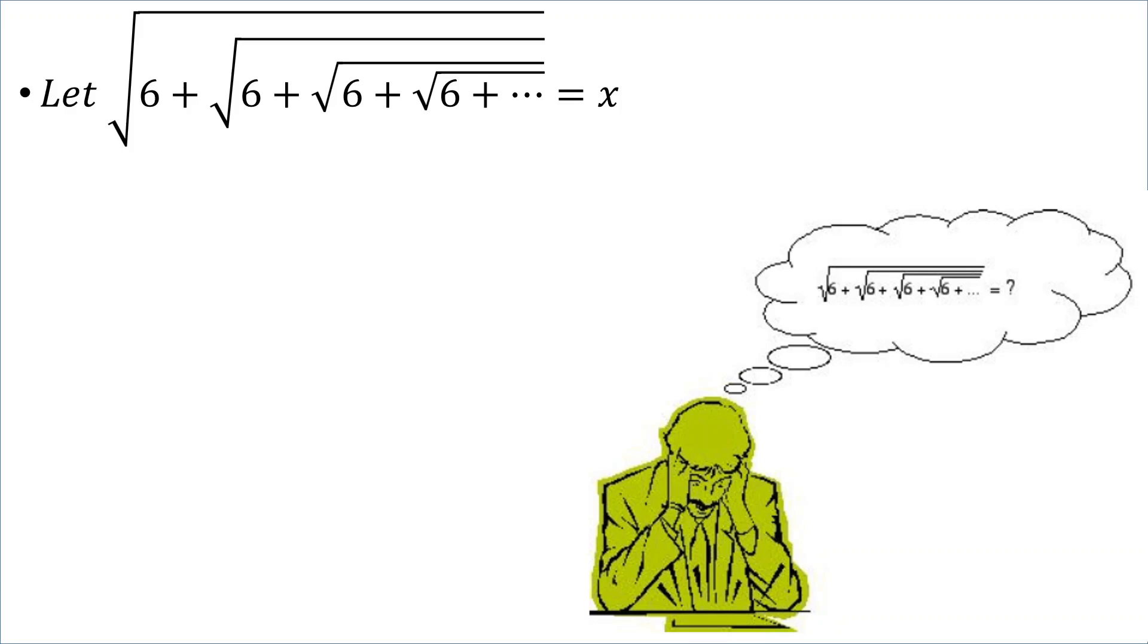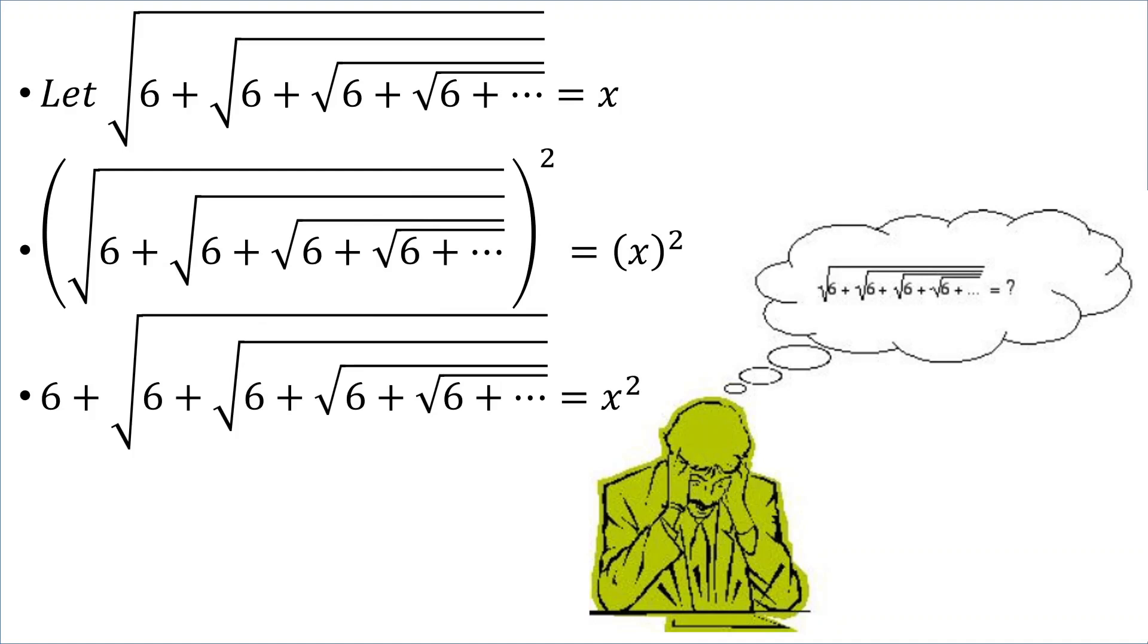Now, because we are dealing with that radical, let's square both sides. So, if we do so, we'll get that 6 plus the square root of 6 plus the square root of 6 plus and so on and so forth infinitely is equal to x squared. But, if we look at it, that infinite nested radical, we said that was equal to x.